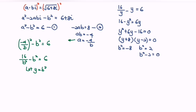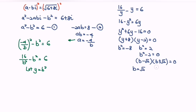Factorize b squared minus 2 equals 0: b minus square root of 2, multiplied by b plus square root of 2, equals 0. So the values are b equals square root of 2 or b equals negative square root of 2.